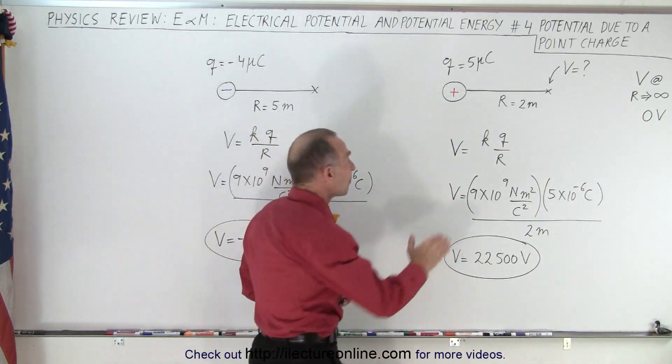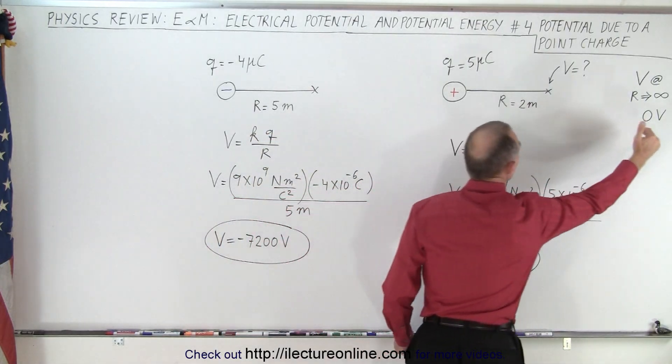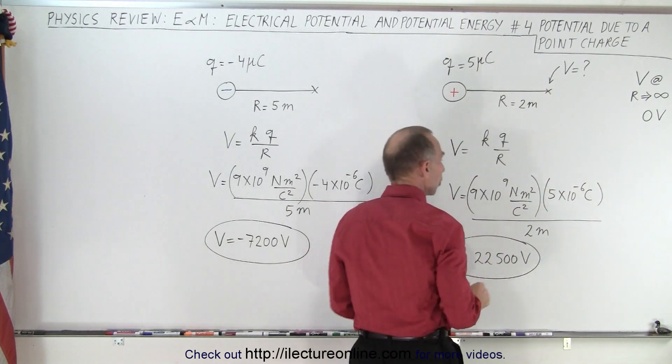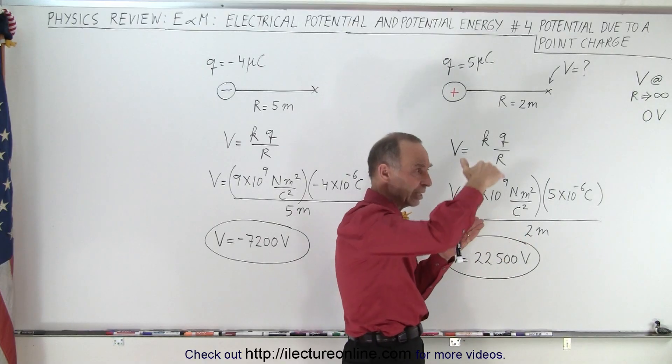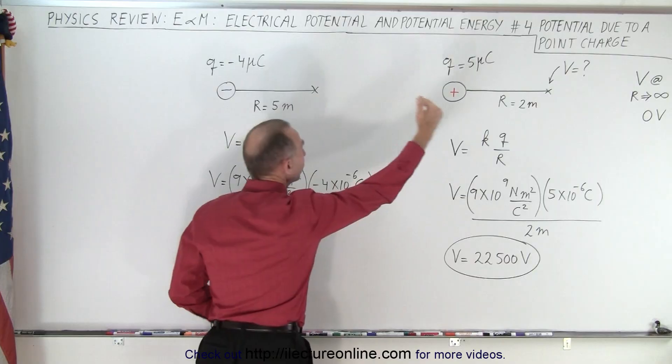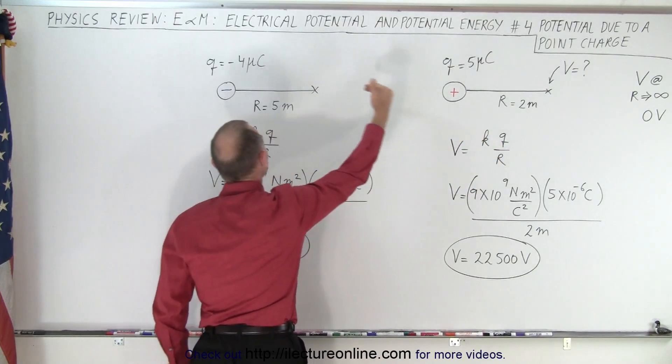But that does mean that if we have a positive charge, the potential, the electric potential goes up as we get closer to a positive charge, because we're moving against the electric field, meaning the potential goes up. But if we have a negative charge, if we then move from infinity at zero volts close to the negative charge, the potential,